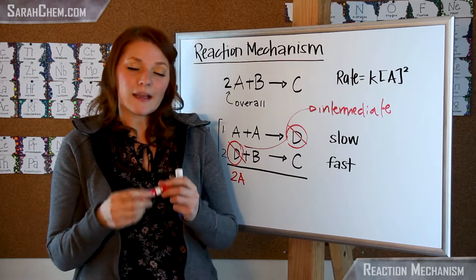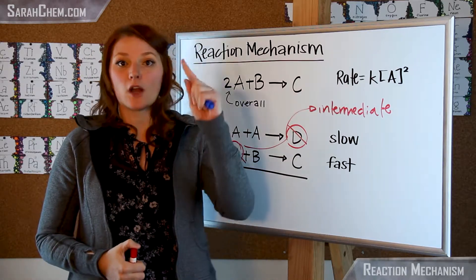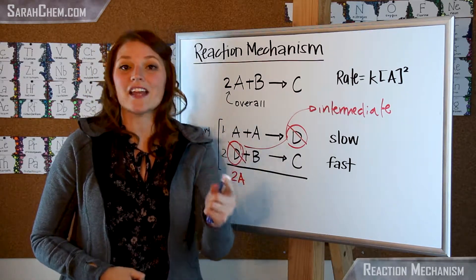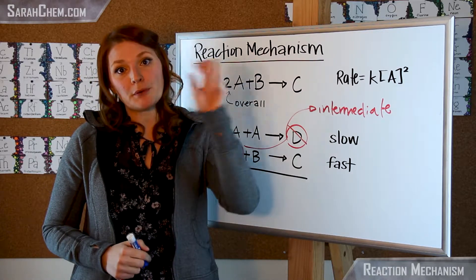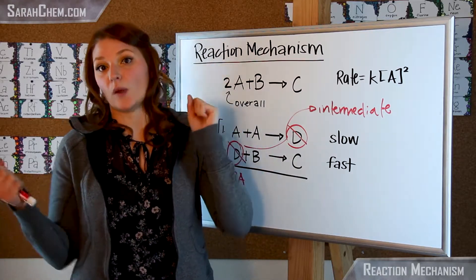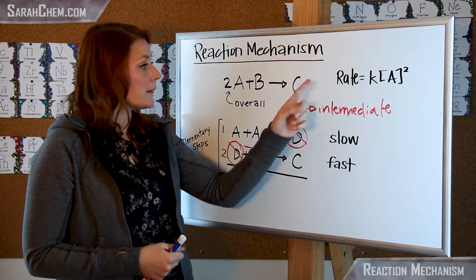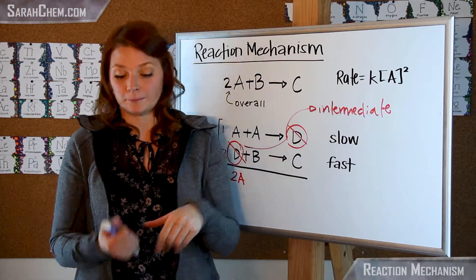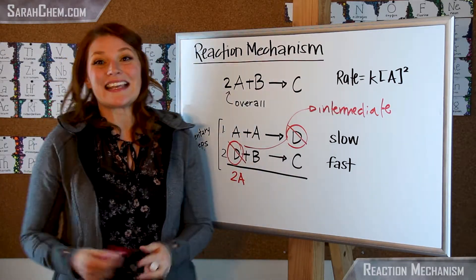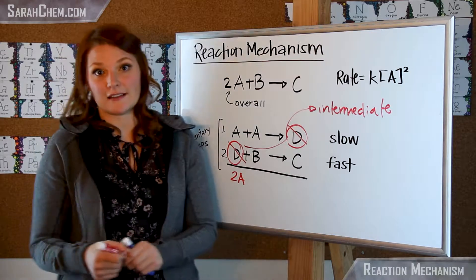So an intermediate is some kind of species that is formed in the process of the reaction and then used. So it's going to start as a product and it's going to end as a reactant and it will cancel out. It is not going to be present in the overall reaction.